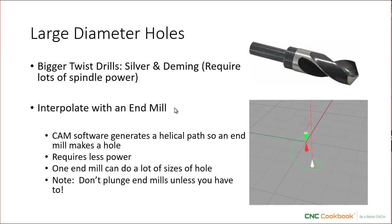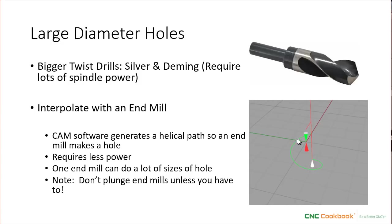Interpolation — magic stuff that CNCs can do. What you're doing when you interpolate is using your CAM software to generate a helical toolpath so that the end mill makes a hole. The end mill is spinning and literally goes down in a helix to make a larger diameter hole than the end mill itself. Interpolation is really great because, number one, it requires much less spindle power than an equivalent-sized twist drill, and number two, one end mill can do lots of different hole sizes, so you may save on tool changes. At some point you'll want to make a hole so big that the twist drill is either too expensive or your spindle doesn't have enough power — that's when you'll love interpolation.